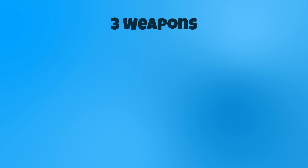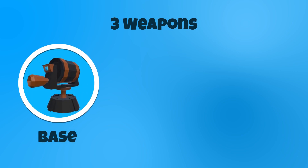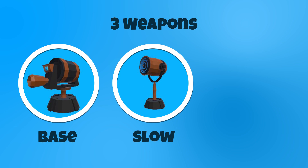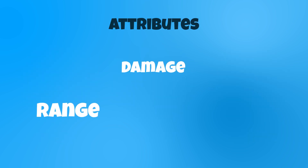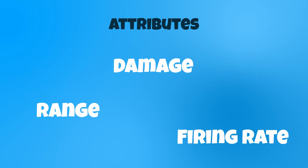We'll have three different weapons: a base weapon, which will be the cheapest; a weapon that slows the enemies; and a cannon, which will be stronger and more expensive. Each weapon will have unique attributes such as range, damage, and firing rate.